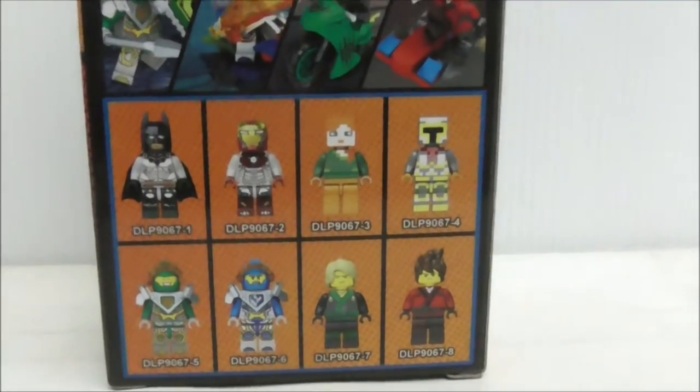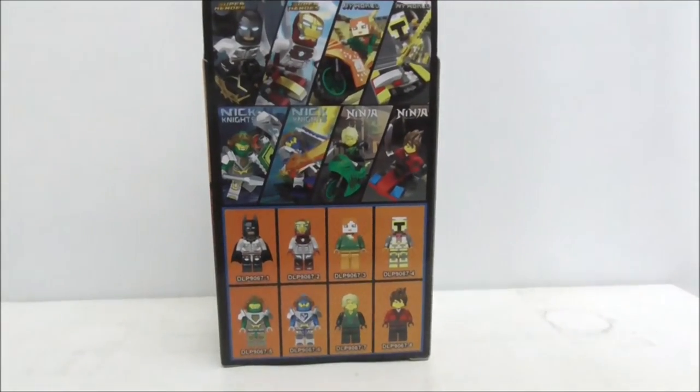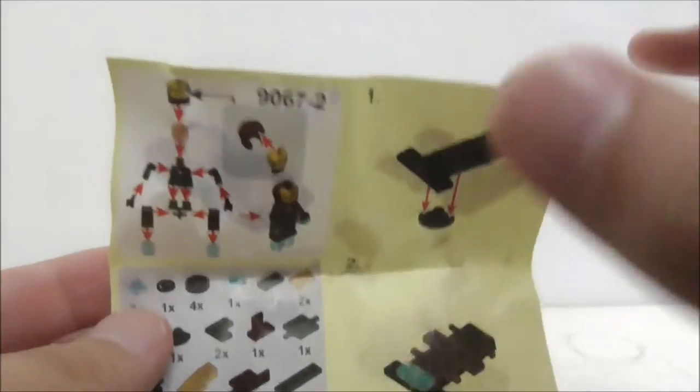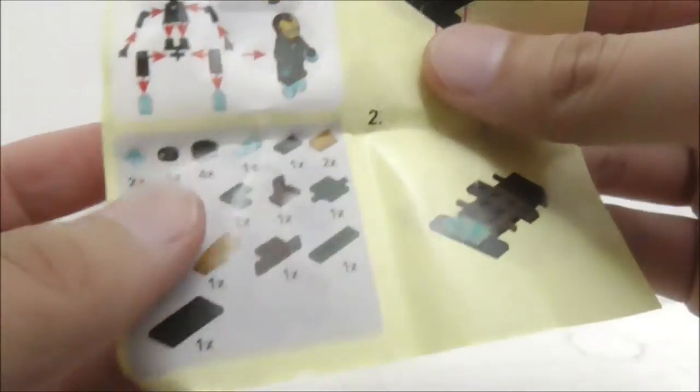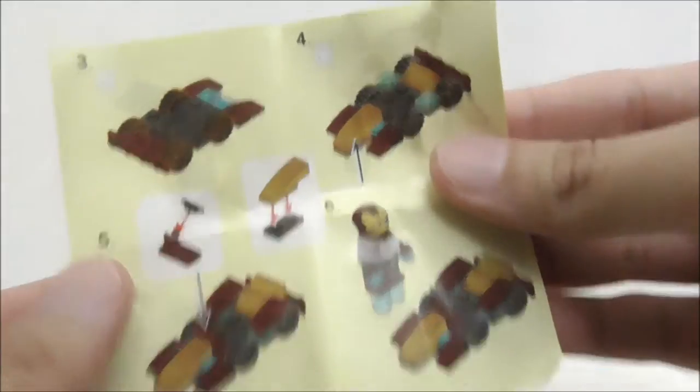Aside from that, that's pretty much it for the box. This is the instruction manual right here, which shows you how to build the main figure, and you have the parts list right here. This is the second page.